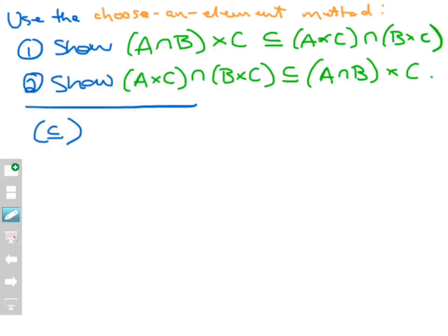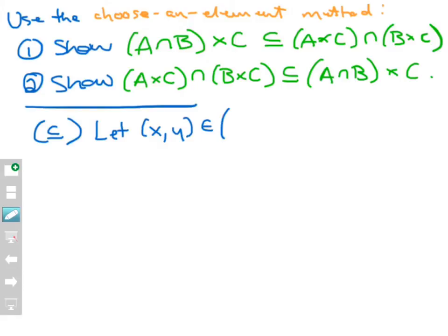Let's work on part one, showing this direction of subset inclusion. I'm going to choose an element inside this set. Now pause and think about what that element will look like. That element is going to be in a Cartesian product, so it's an ordered pair — this is a very important concept. If I'm choosing an element inside a Cartesian product, it has to be an ordered pair, because that's what Cartesian products are: sets of ordered pairs. So let X comma Y be an element of A intersect B cross C.